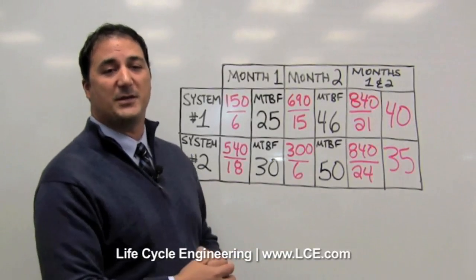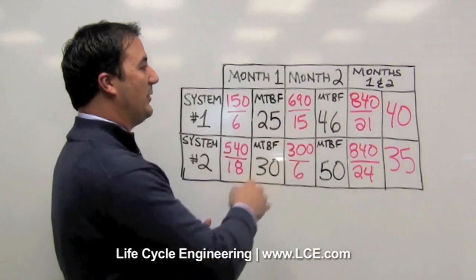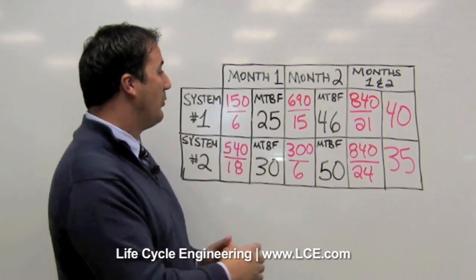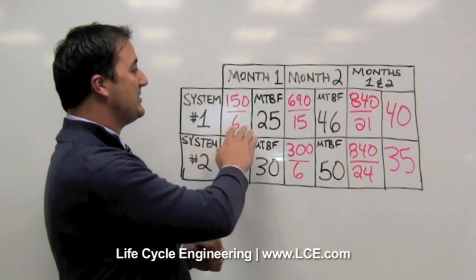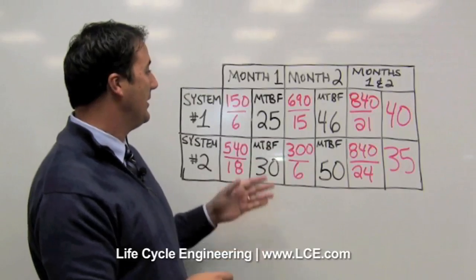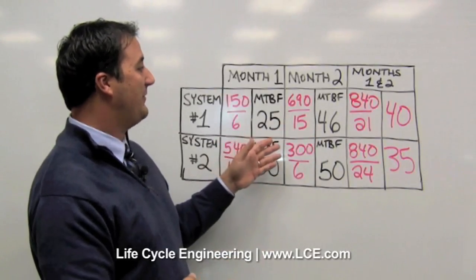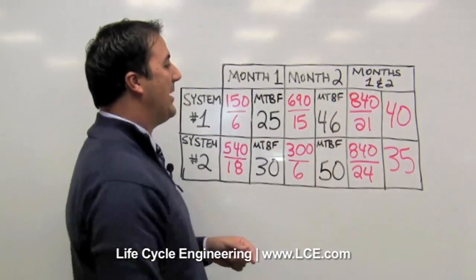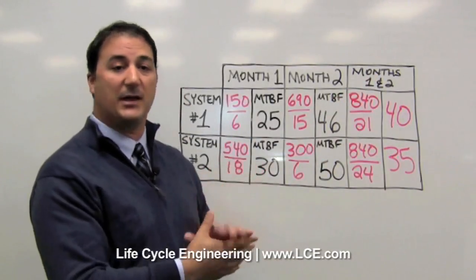So what have we learned from this example? One of the things we've learned is that mean time between failure has an assumption that there's a constant failure rate. And what we can see from our example here is that system one and system two are not exhibiting a constant failure rate. Each month, the mean time between failure has been increasing, and that's what ends up giving us the different mean time between failures when we combine the two months together.